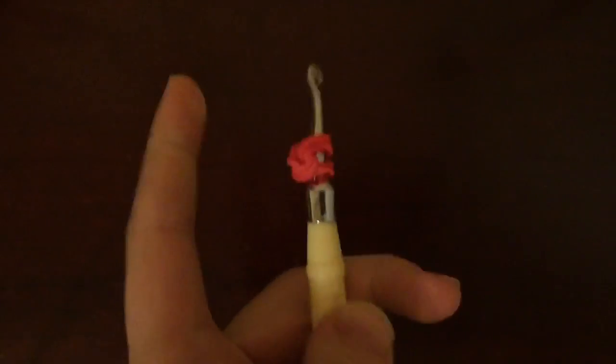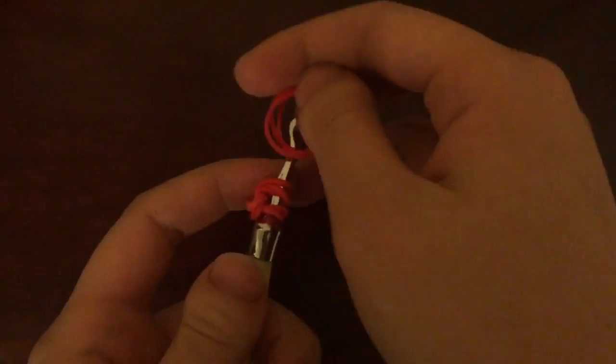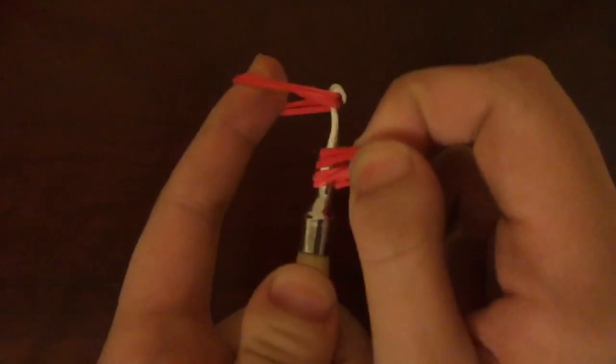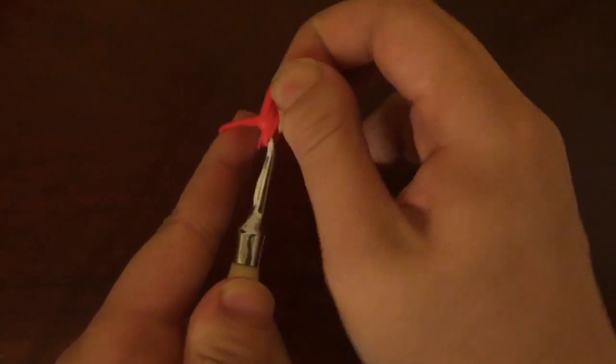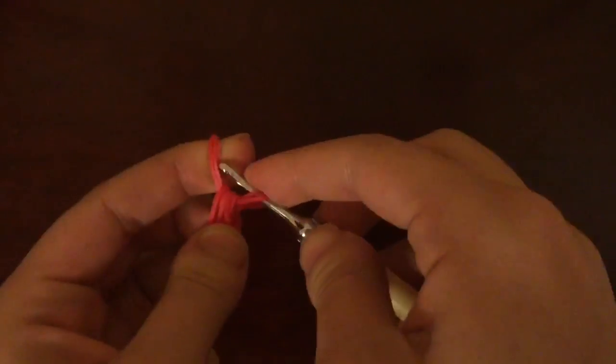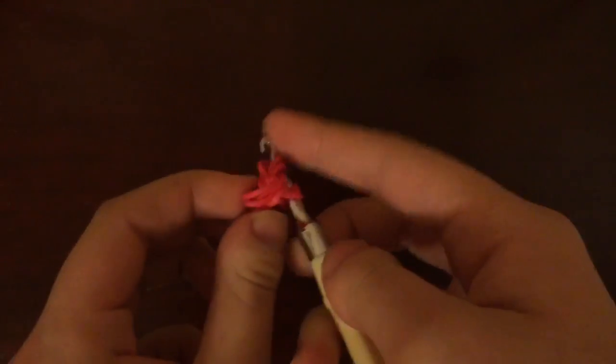And I'm going to do that again. Take 3 red rubber bands, put them on your hook, and slide what's on the hook onto the new rubber bands and place the open end onto the hook.